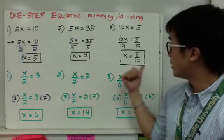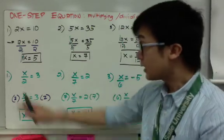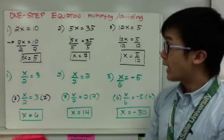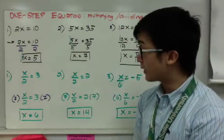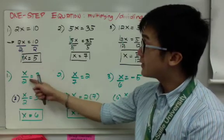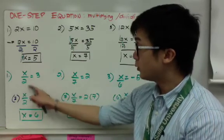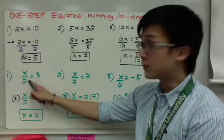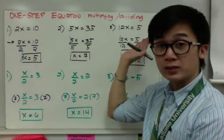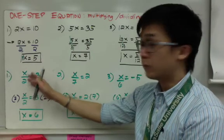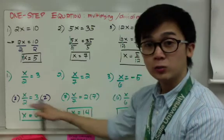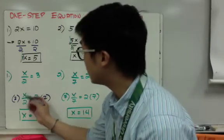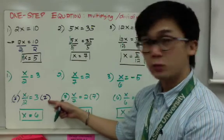The next three examples involve fractions and use multiplication as the inverse of division. For example 1, x over 2 equals 3: multiply both sides by 2. The 2's cancel, leaving x equal to 3 times 2, which is 6. For example 2, x over 7 equals 2: multiply both sides by 7, cancelling the 7's, giving x equals 14.